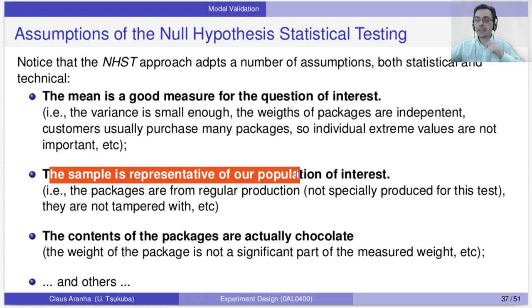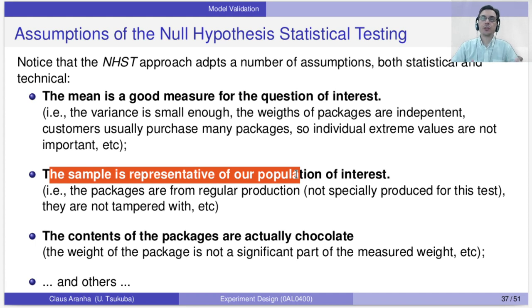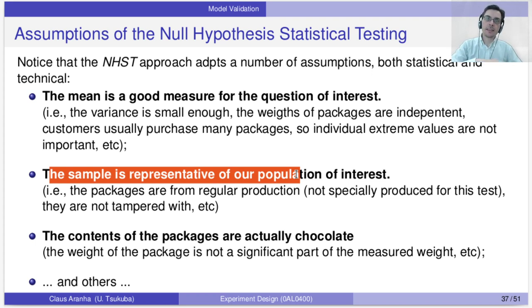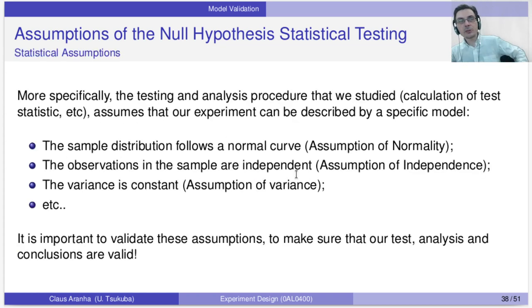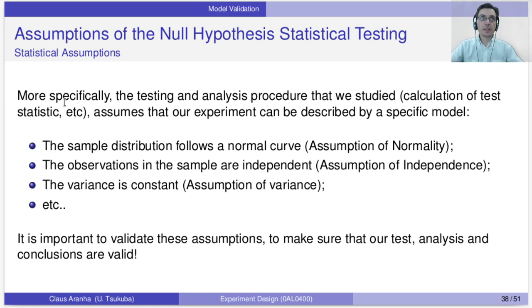If you know a test is coming, you might clean your factory, make repairs, and bring in the best workers — which would affect your test results. You want to test under regular production conditions. Also, if the package weight includes the packaging and not just chocolate, the variation in weight is only a small proportion. These are technical assumptions to be careful about. The statistical assumptions for the t-test and z-test are a bit more fixed and easier to study.